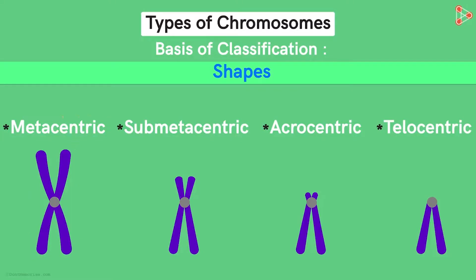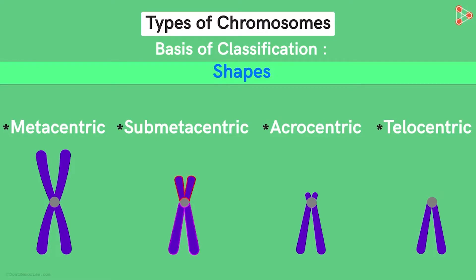Metacentric chromosomes: in this type, the centromere lies in the center of the chromosome, so they are V-shaped and the two arms are equal in length. Submetacentric chromosomes: chromosomes have arms of unequal length as the centromere lies near the center. They are J-shaped or L-shaped.